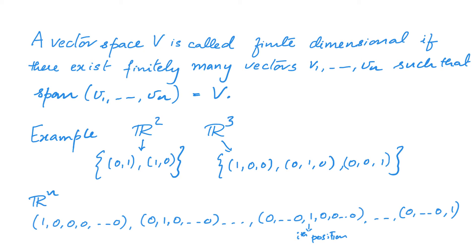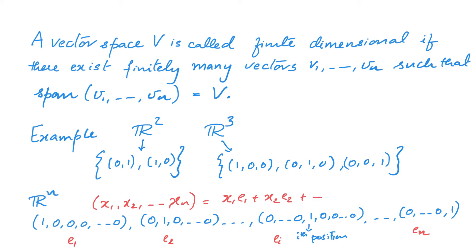In fact, these n vectors are so important that we denote them by a convenient symbol. The first vector is called e1, the second e2, the ith vector is ei, and the nth vector is en. Notice that any element (x1, x2, ..., xn) equals x1*e1 + x2*e2 + ... + xn*en. Thus we have proved that the vectors ei span Rn.